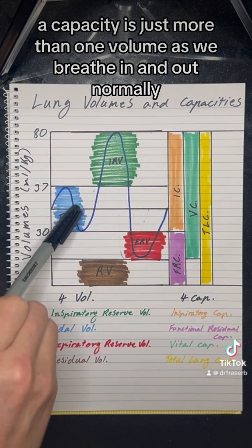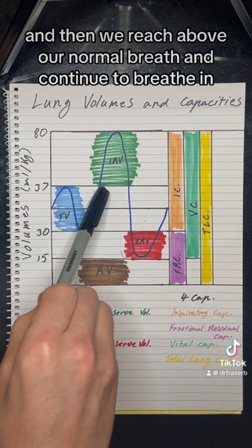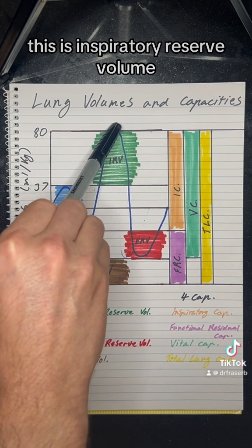As we breathe in and out normally, this is tidal volume. As we breathe in and then reach above our normal breath and continue to breathe in, this is inspiratory reserve volume.